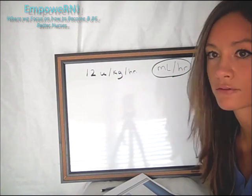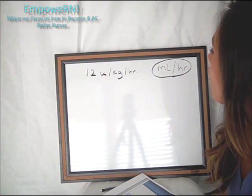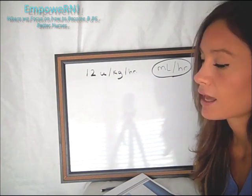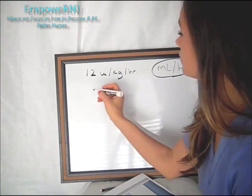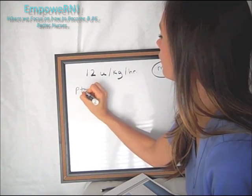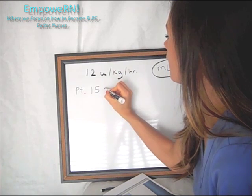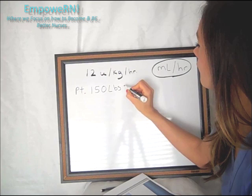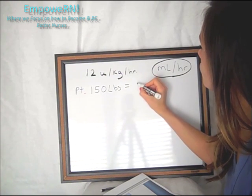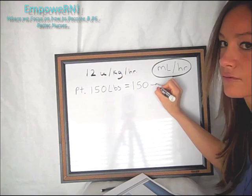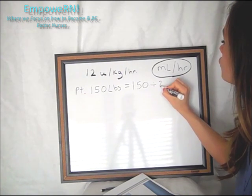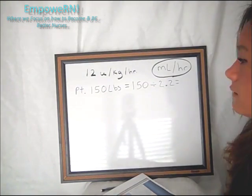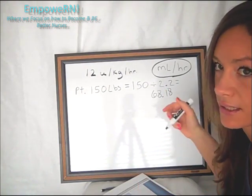So we start with an order of 12 units per kilogram per hour. Whenever we're getting a drip, we need to know one thing and that one thing is how many milliliters per hour we are going to run the drip at. So what we want is mls per hour. And that will be our final answer. What we need to do before we start anything is we need to find out our patient's weight. Now let's say our patient weighs 150 pounds.